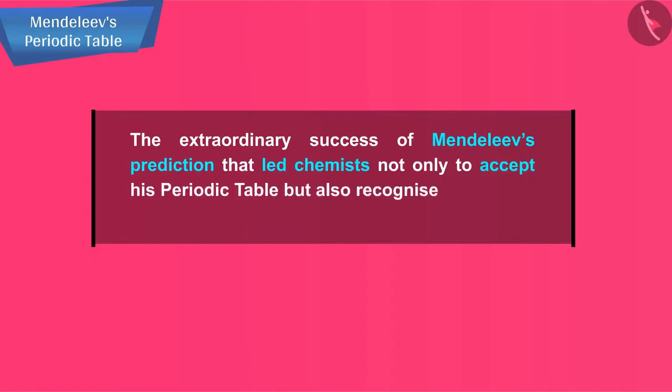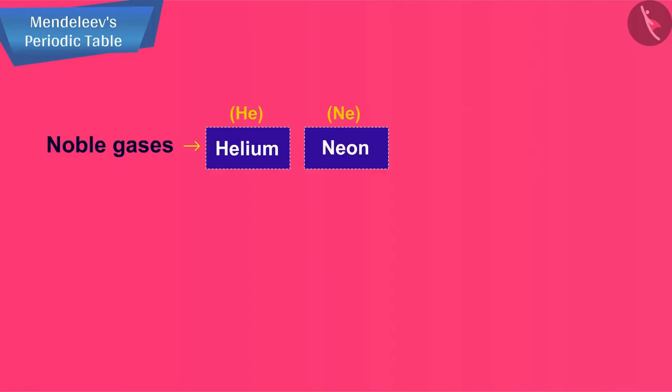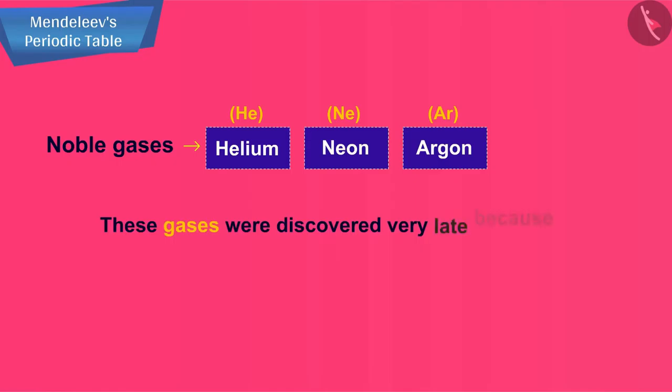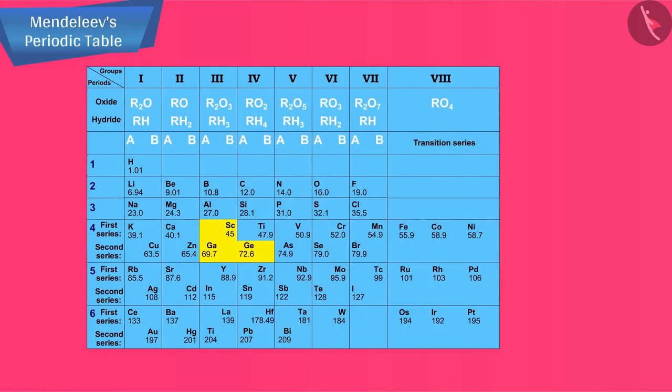Noble gases like helium, neon, and argon have been mentioned in many contexts before. These gases were discovered very late because they are very inert and present in extremely low concentrations in our atmosphere. One of the strengths of Mendeleev's periodic table was that when these gases were discovered, they could be placed in a new group without disturbing the existing order.